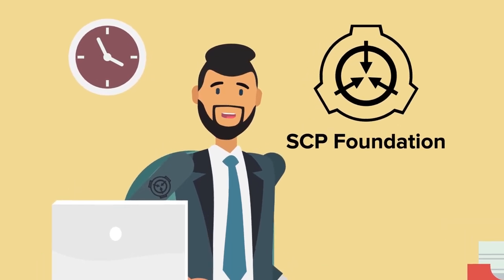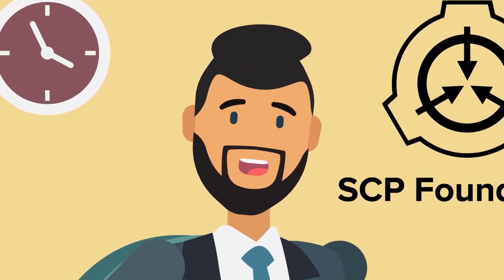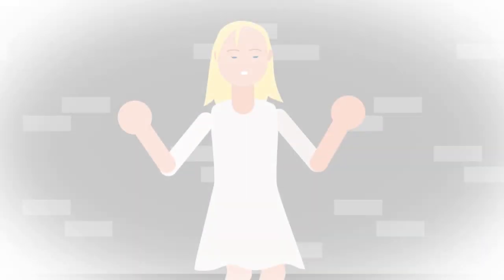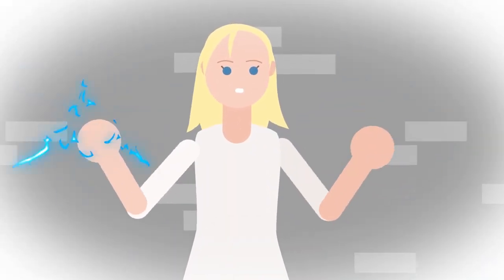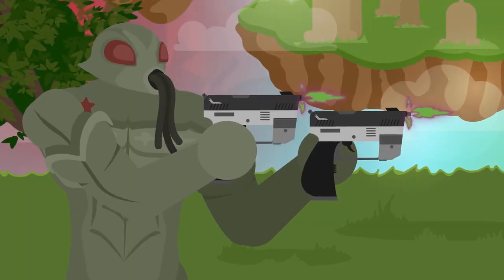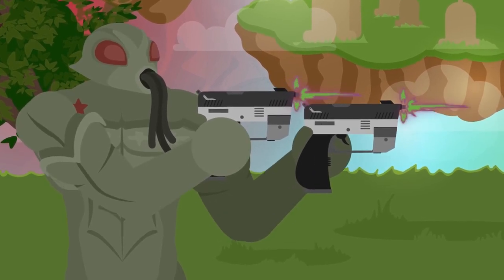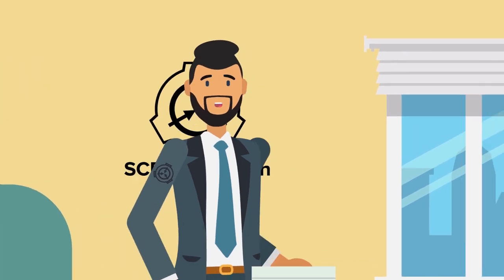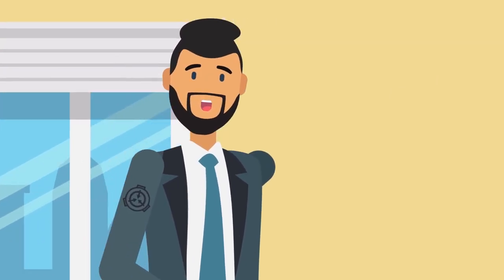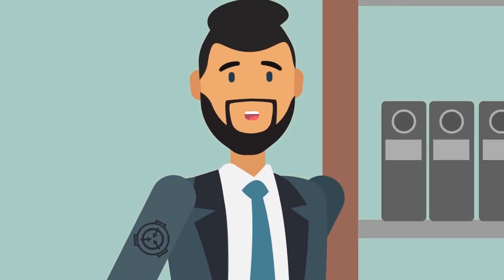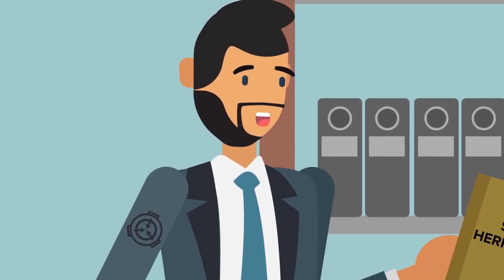The SCP Foundation has a long history of experience with humanoid anomalies, from simple reality benders like SCP-239, to strange transplants from other universes like SCP-2273. But one of the oldest, strangest, and most lethal humanoid anomalies in the Foundation's considerable cabinet isn't a superhuman or a soldier.